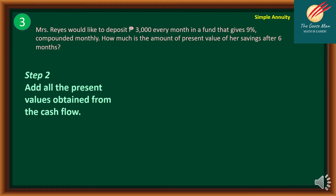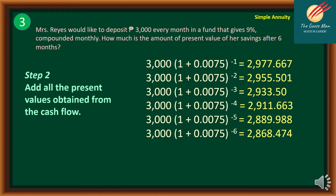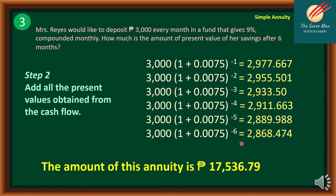Step two is to add all the present values from the cash flows. For example, 3,000 × (1 + 0.0075)^(−1) = 2,977.667, and 3,000 × (1 + 0.0075)^(−6) = 2,868.474. Summing all six present values gives a total of 17,536.79. Therefore, the total amount of the present value of the annuity is P17,536.79.